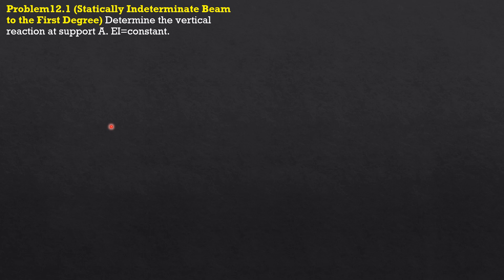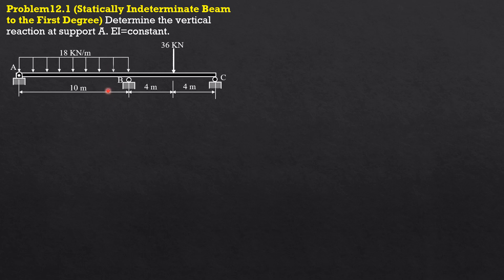Here is a problem on structural analysis which is statically indeterminate to the first degree, and I presented 12 different solutions to this. That's one way you can master structural analysis, especially the methods of analyzing indeterminate structures such as beams. The first one is the method of consistent deformations combined with the double integration method. Here is the given problem — if you look at the figure and evaluate it, it is really statically indeterminate to the first degree.